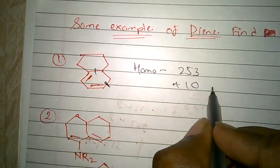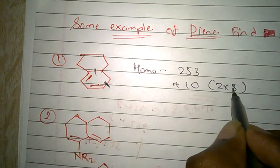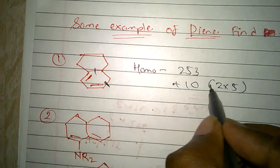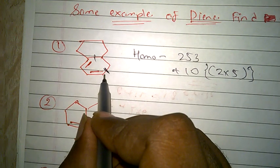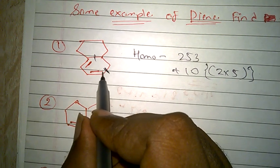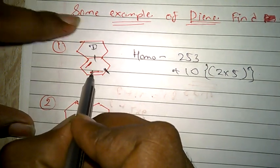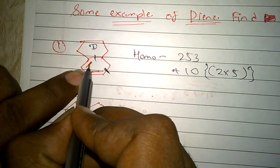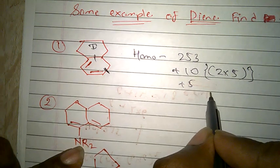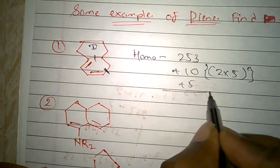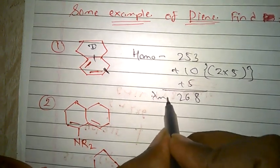There is nothing, no increment, no extra conjugation. For this ring, the ring has an exocyclic double bond, for that add 5. There is no extra conjugation. Then overall, add this. This is 268, this is the lambda max for this.